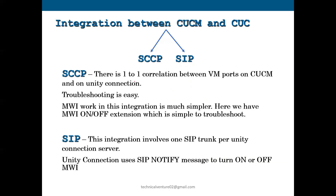In the SCCP part, it's a one-to-one relation between the VM ports on CUCM and on the Unity Connection. SCCP is preferred because troubleshooting is easy and the MWI work in the SCCP integration is very simple. If there is any issue with MWI — like the on and off is not triggering — it's very easy to troubleshoot on the SCCP side.